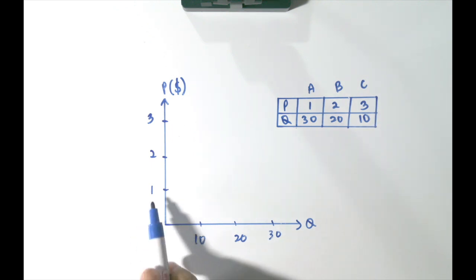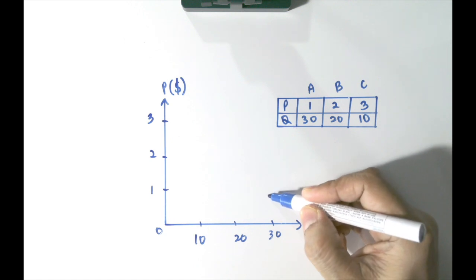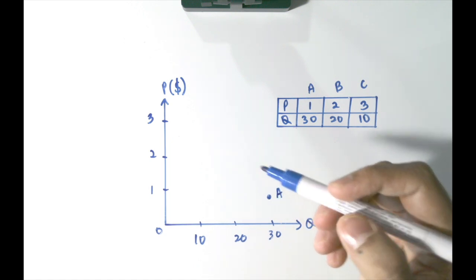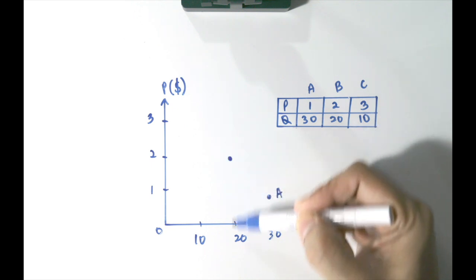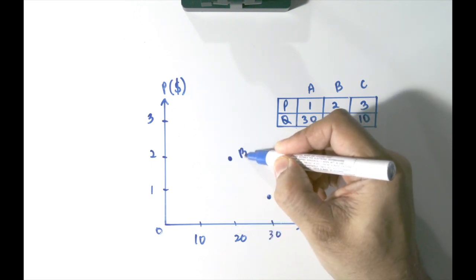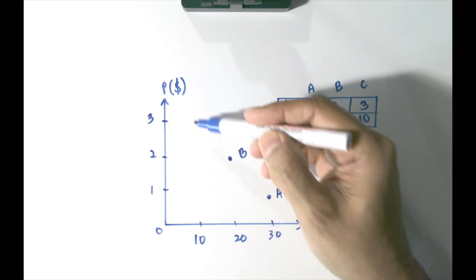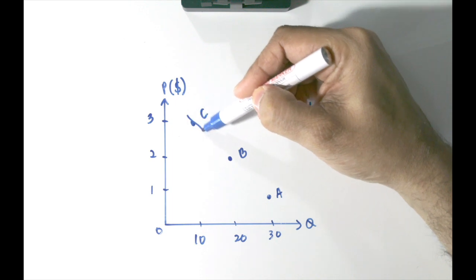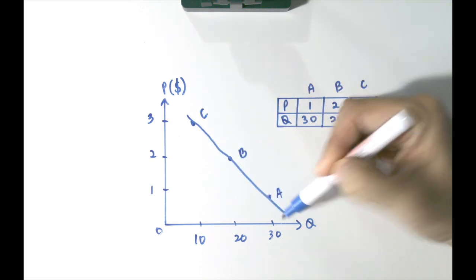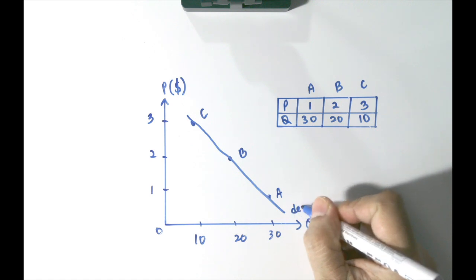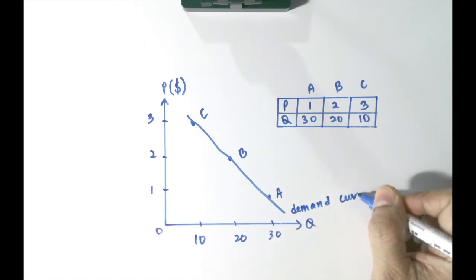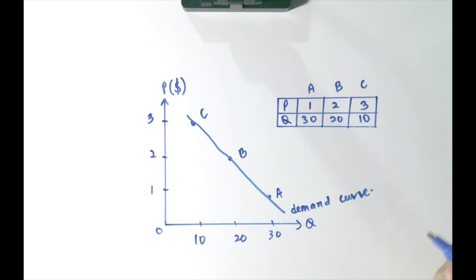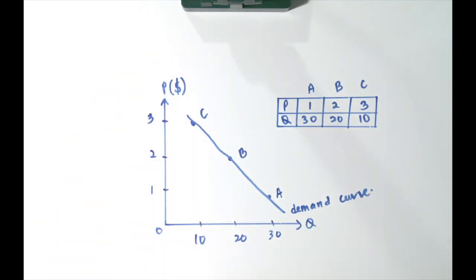So now let's plot. Price 1, quantity is 30 — this is point A. When the price is 2, quantity demanded is 20 — we have point B. And when price is 3, quantity demanded is 10 — this is point C. Now if we join all these points and connect them together, this is going to be the demand curve. You can see the demand curve is downward sloping.